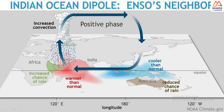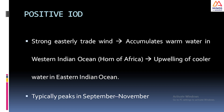The heat generated causes air particles to expand and rise with moisture. After the process of condensation, precipitation occurs in the African region — so Africa has better chances of rainfall due to the low pressure. After the air reaches the troposphere level, it subsides in the region of Indonesia, creating cooler than normal temperatures. This cycle results in dry conditions in Indonesia and Australia with very less chance of rainfall. This is the positive IOD, characterized by strong easterly trade winds accumulating warm water in the western Indian Ocean.